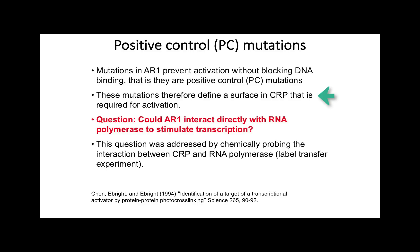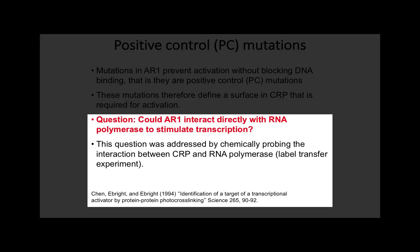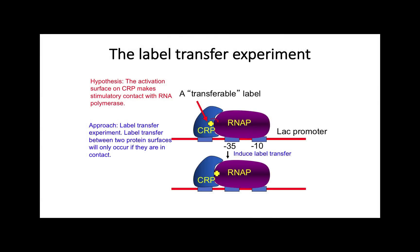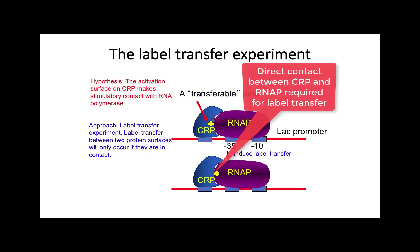This led Richard Ebright and colleagues to ask: could AR1 interact directly with RNA polymerase to stimulate transcription? They addressed this question by chemically probing the interaction between CRP and RNA polymerase in a label transfer experiment. The idea: AR1 was attached to a transferable label, then transfer of the label onto RNA polymerase was induced. The label was designed so that transfer can only occur if the two protein surfaces are in direct contact. So if label transfer is observed, you've proven that this contact occurs.